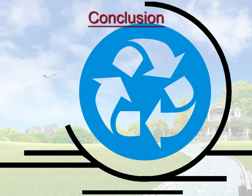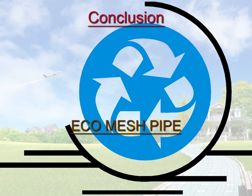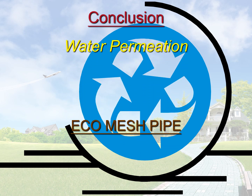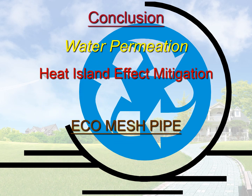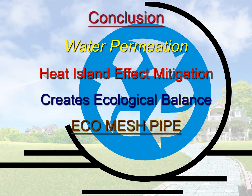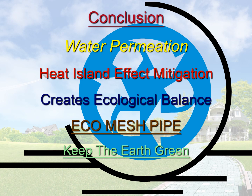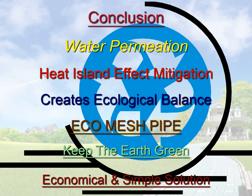Conclusion: The eco-mesh pipe enables water permeation, mitigates the heat island effect, creates ecological balance, keeps the earth green, and is an economical and simple solution.